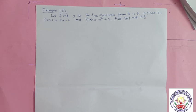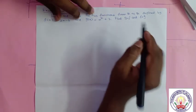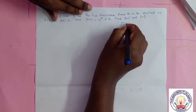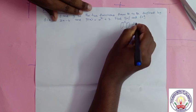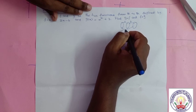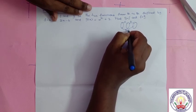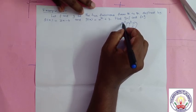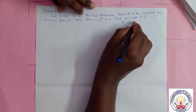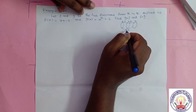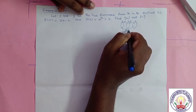We have already studied in the 10th standard the composition of two functions. g composition f means function f is from R to R, domain and co-domains are R. Another function g is also R to R. Then from the first domain to last co-domain, the function defined is called g composition f — that is, composition of f with g. It is denoted by g∘f.